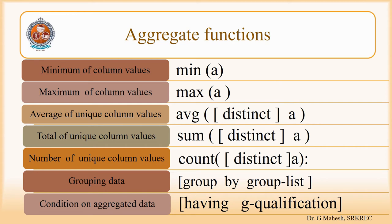Now let us see some aggregation functions. The first is MIN(attribute) for the minimum value. Second is MAX(attribute) for the maximum. Third is AVG(DISTINCT column), which gives the average of unique column values. Then SUM(DISTINCT attribute) gives the total of unique column values, and COUNT(DISTINCT column) gives the number of unique column values. You can also use GROUP BY and HAVING clause for aggregate data.